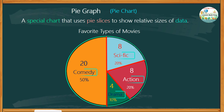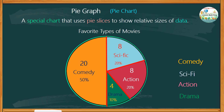For this particular chart, it is categorized as the different types of movies, such as comedy, science fiction, action, and drama, which can also be expressed in the form of a legend. A specific value is written for each category.